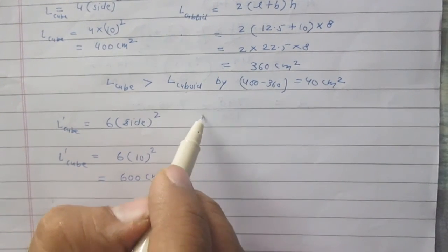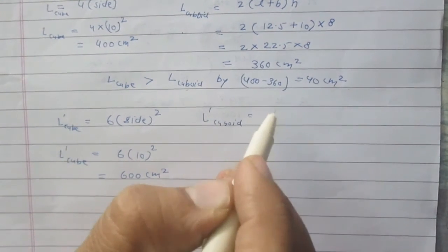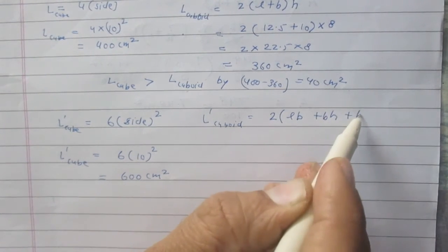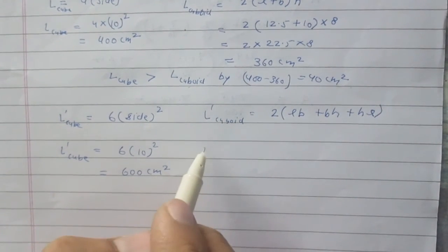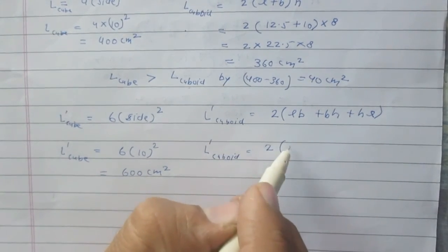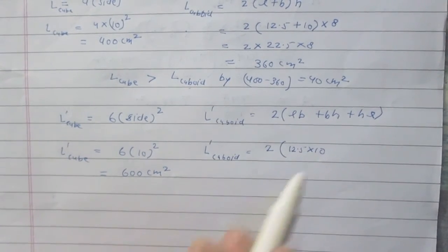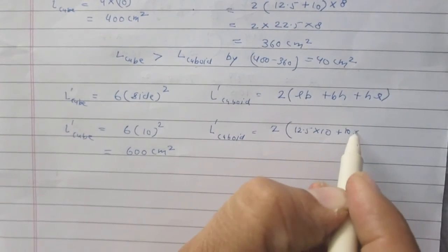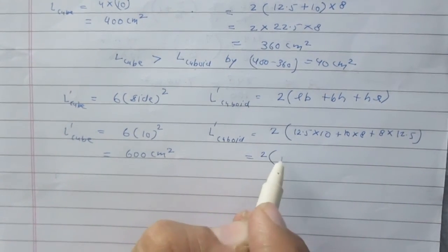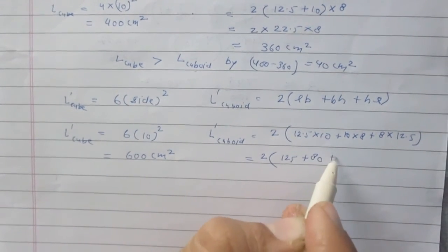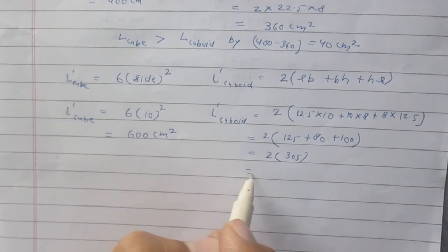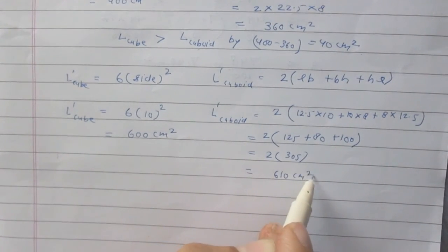Total surface area of a cuboid is twice of (length × breadth + breadth × height + height × length). So, total surface area of the cuboid is 2 × (12.5 × 10 + 10 × 8 + 8 × 12.5), which gives 2 × (125 + 80 + 100), or twice of 305, and finally you get 610 cm².